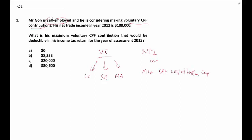The question asks: what's the maximum voluntary CPF contribution that would be deductible in his income tax for the year of assessment 2013? It's asking what is the limit that he can put in. We know that his income is $100,000. The maximum he can contribute is defined by the maximum CPF contribution cap. For the year of assessment 2013, you have a wage ceiling for CPF of $5,000.